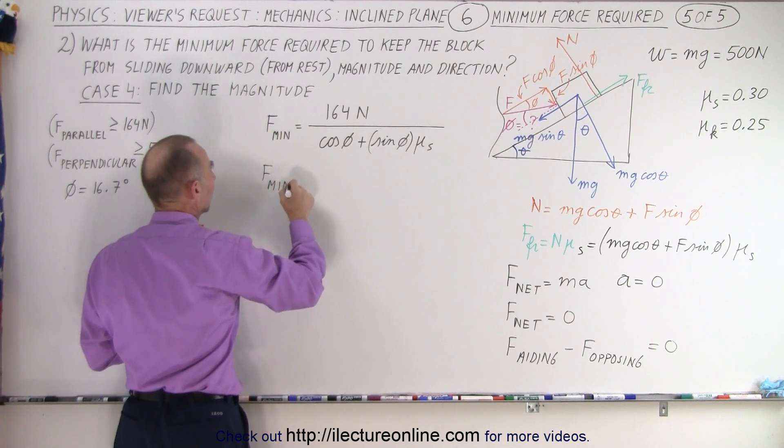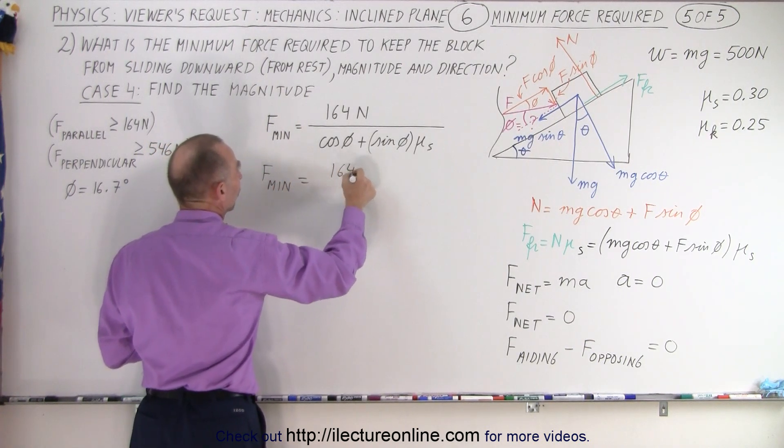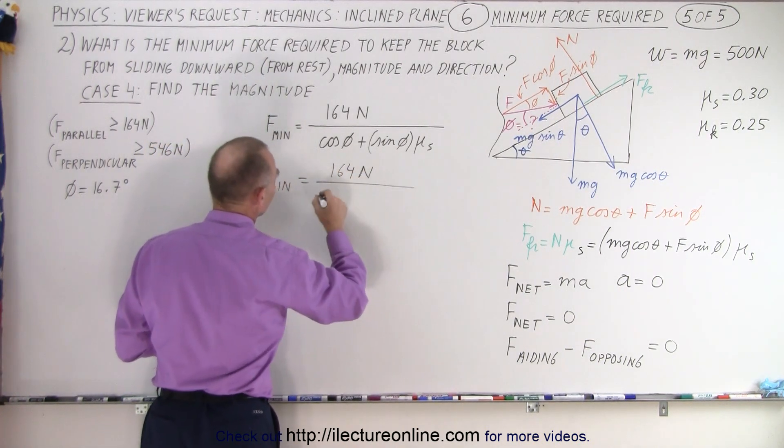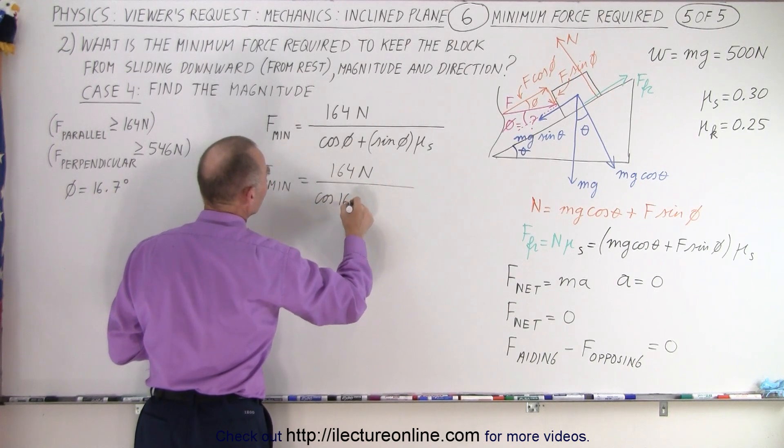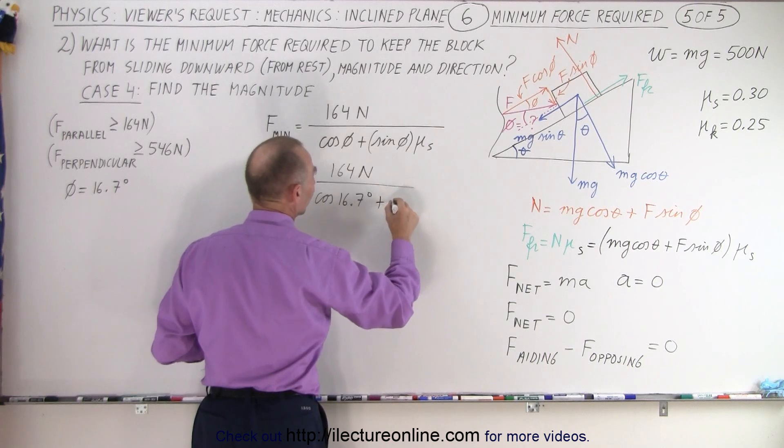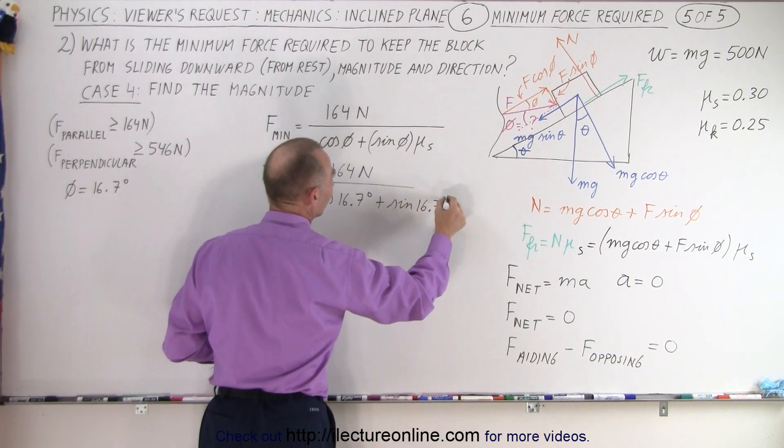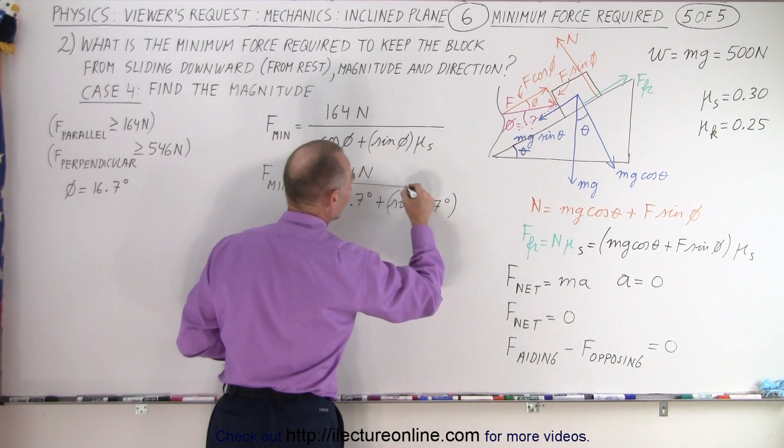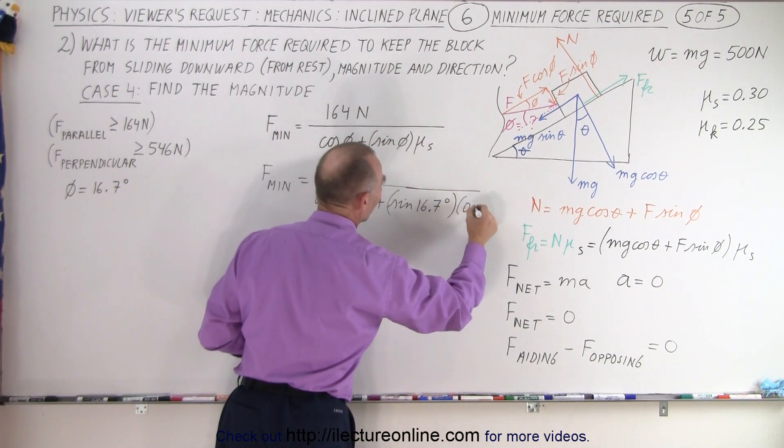So f min is equal to 164 newtons divided by the cosine of 16.7 degrees, which is what we found in the previous video, plus the sine of 16.7 degrees multiplied times mu sub s, which is 0.30.